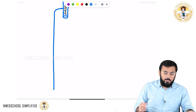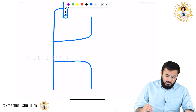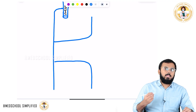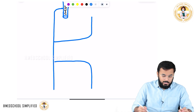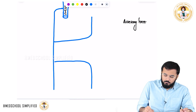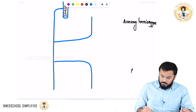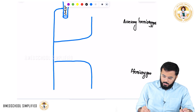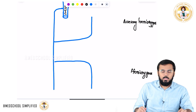Into this azygous vein, two other veins are draining: one vein coming from the bottom is called hemiazygous, and the vein coming from the top is called accessory hemiazygous. So the two important veins are the accessory hemiazygous and the hemiazygous vein.